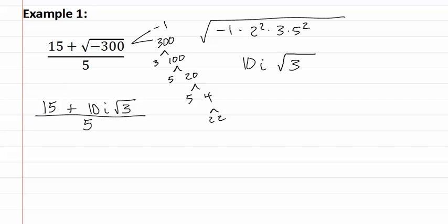Now we might feel like we just want to take a five out of the fifteen and the five. Remember that is not possible, we must first factor out in the numerator. Let's factor out a five, which will leave us with three plus two i root three all over five.